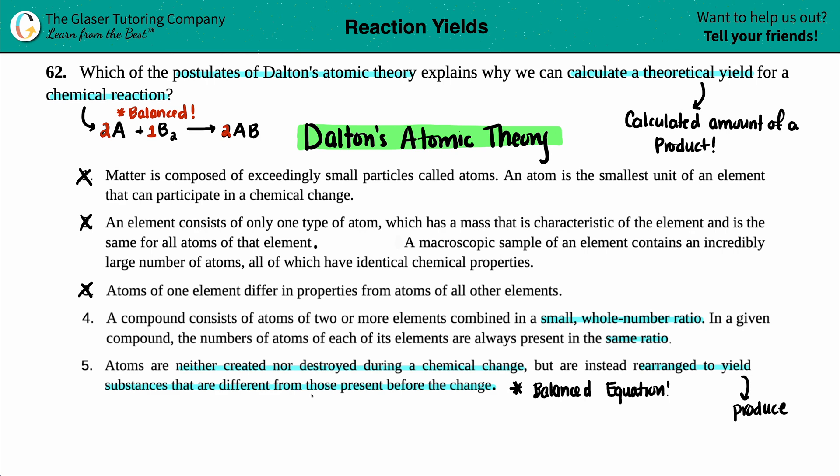Which of the postulates explains? I would say it's definitely number five. Now, number four a little bit, because they're talking about that small whole number ratio. So this is starting you off because they're talking about a compound with the same ratio. I would even star this one off as well, but definitely number five.